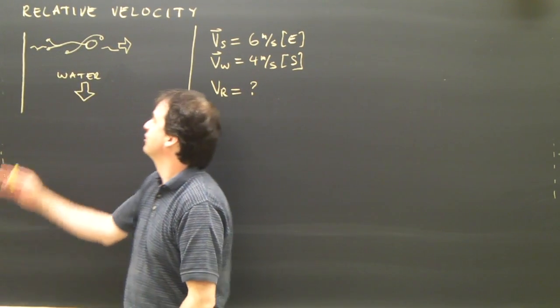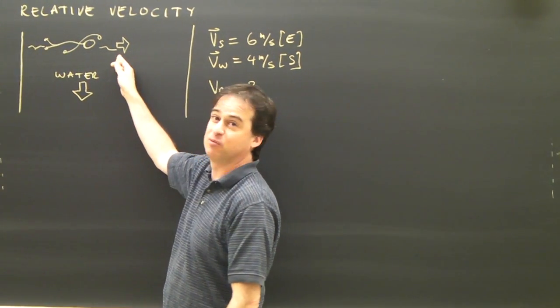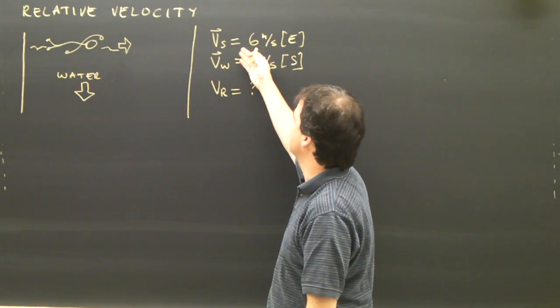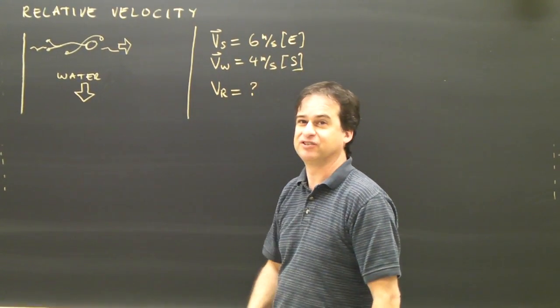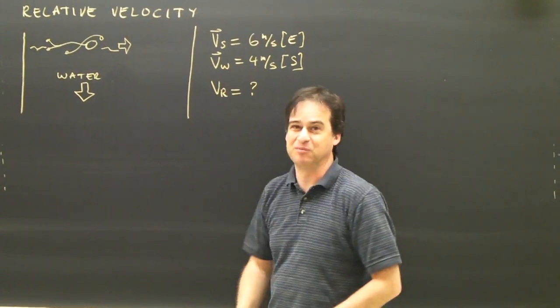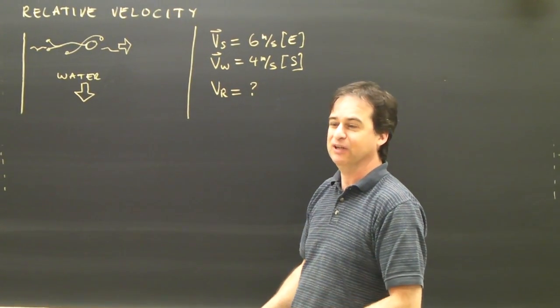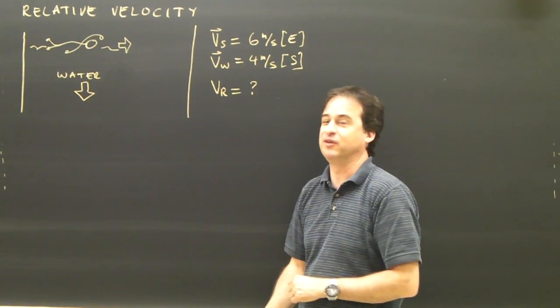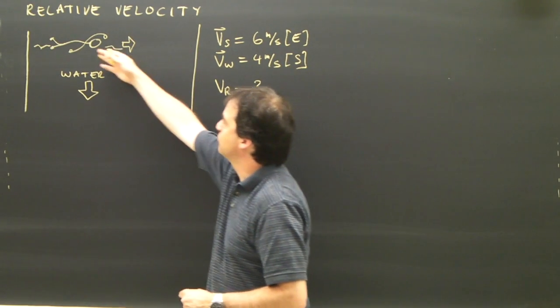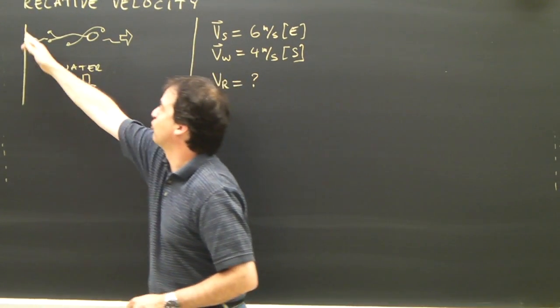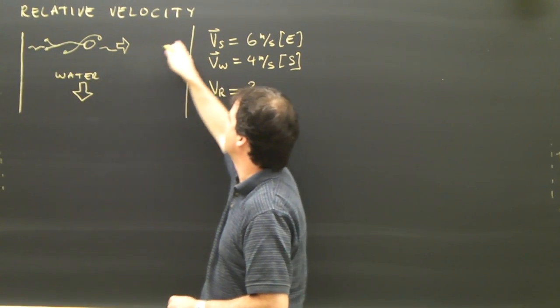What I've got here is a swimmer swimming this way. The velocity of the swimmer is 6 meters per second to the east. Of course, these numbers don't make sense. Nobody can swim that fast, but I want to keep the numbers simple so that you don't get bogged down with the numbers. The swimmer is swimming this way. Here's the shore over here. The swimmer jumps in and swims across to this side.